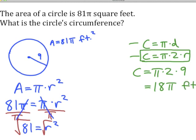That would be an exact answer, expressed in terms of π. If we wanted to, we could multiply 18 times π or 18 times 3.14 to give an approximate answer. But if you were asked for an exact answer, you would leave it as 18π feet.